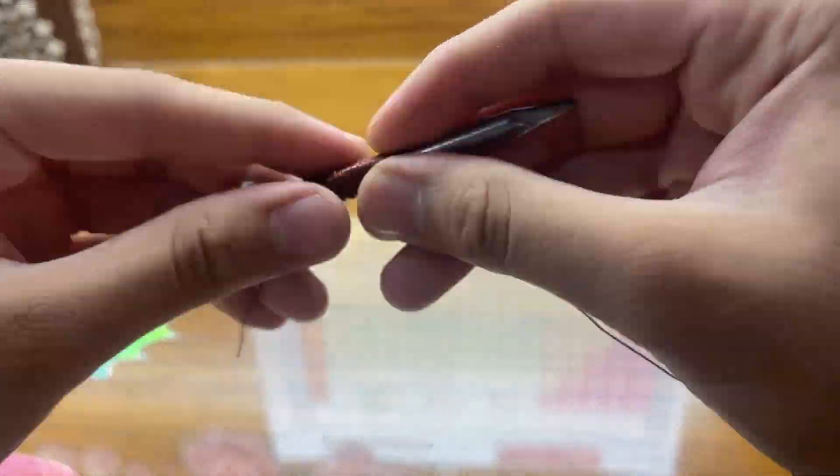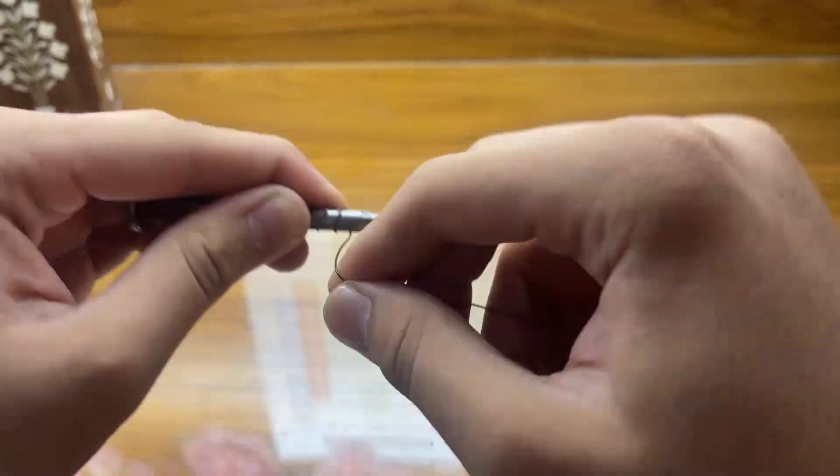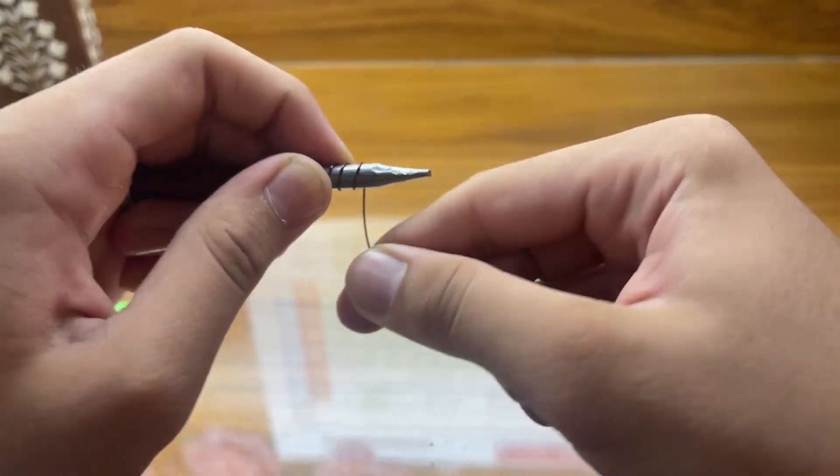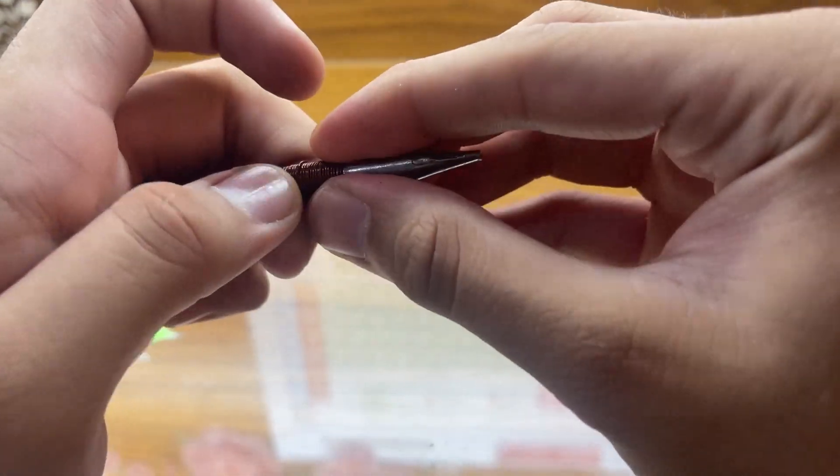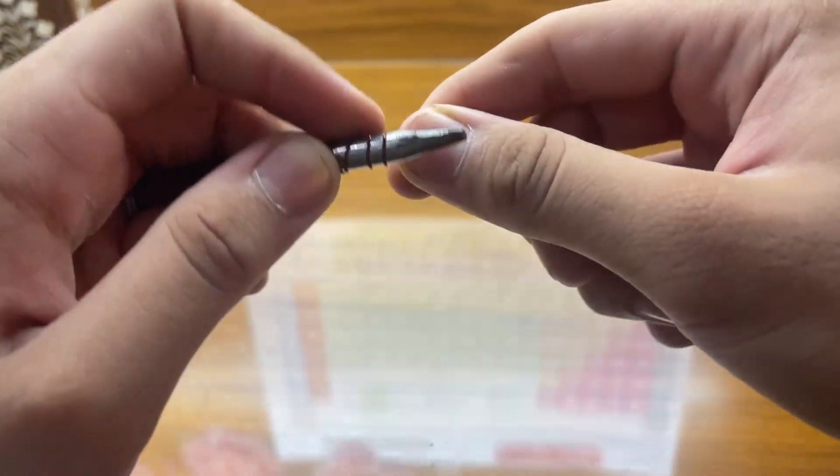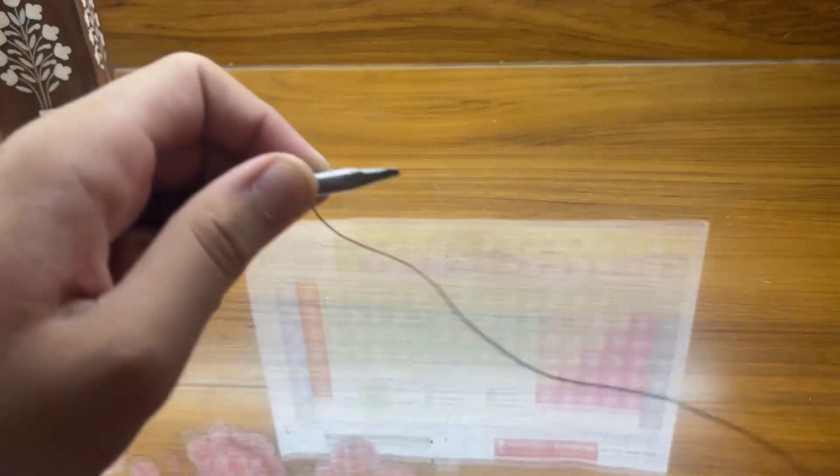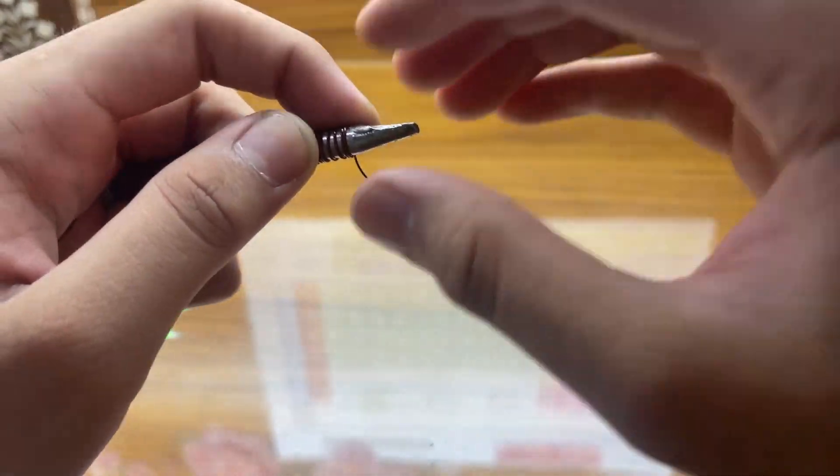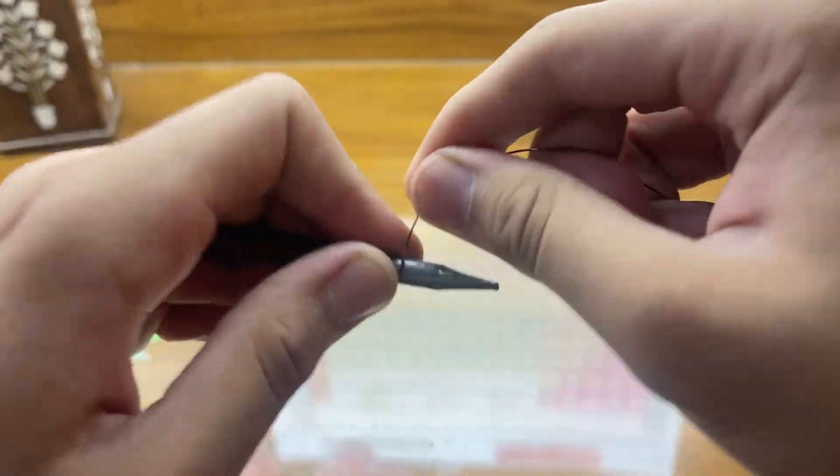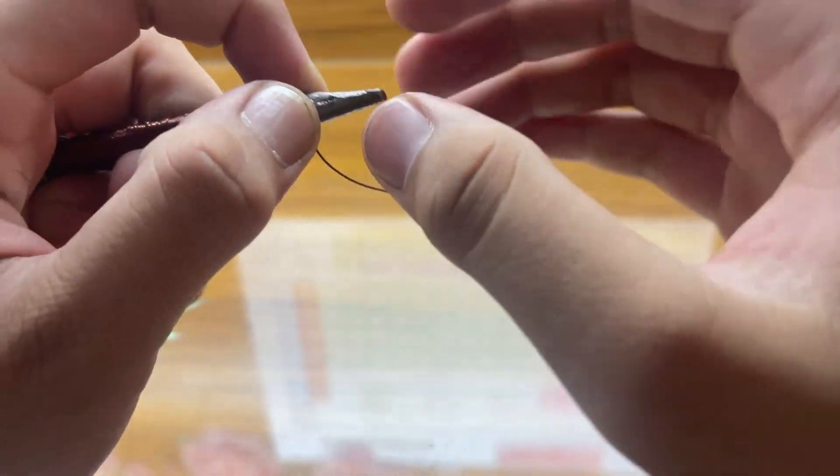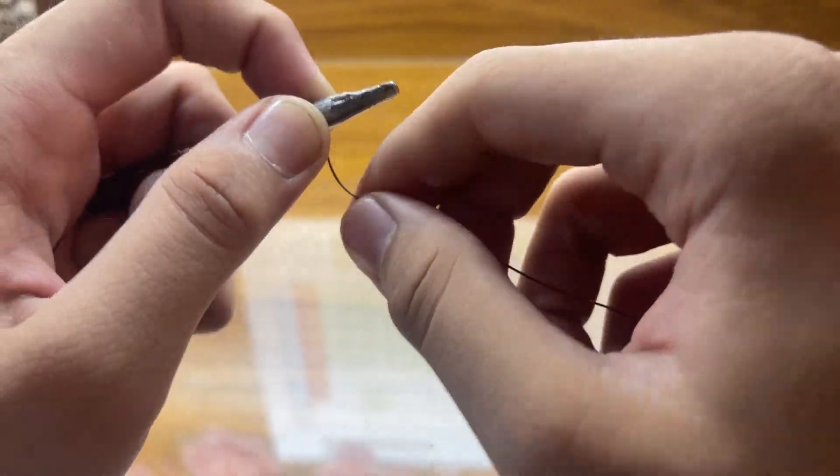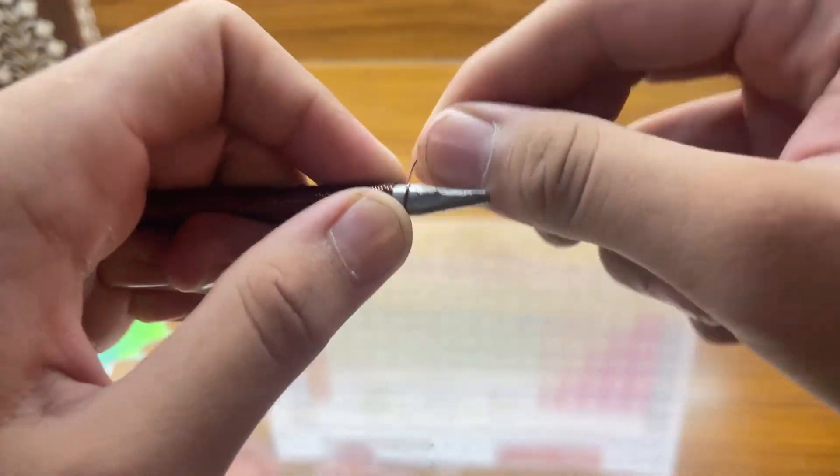I've also sanded this nail down with sandpaper to remove any rust or debris which formed on the nail. Make sure you also sand the nail down before doing this whole procedure. We're just about to finish now, just a few more turns and we'll be finished.